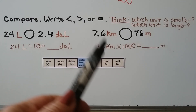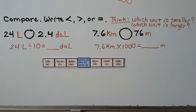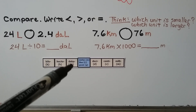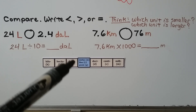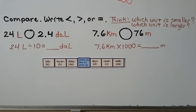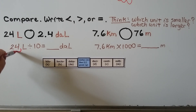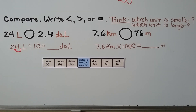We need to compare these units and write less than, greater than, or equal to. We think about which unit is smaller and which is larger. We're comparing 24 liters to deciliters — the liter is the base unit, and deciliters are smaller. So we divide: 24 liters divided by 10 equals 2 and 4 tenths — we move the decimal one hop to the left, from after the 4 to between the 2 and 4 — giving us 2 and 4 tenths deciliters. So these are equal.